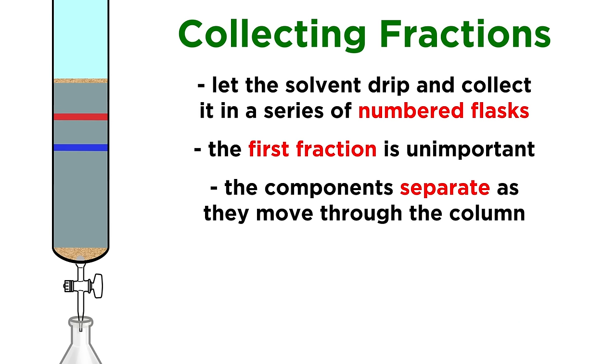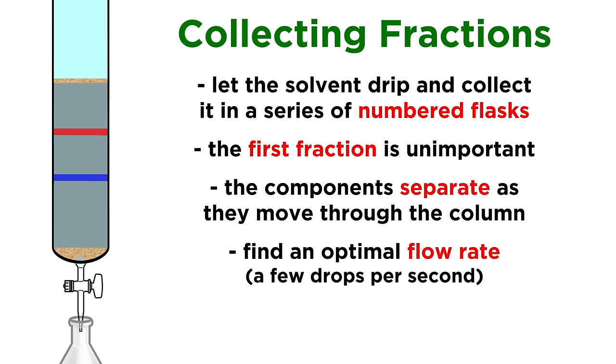As we push eluent through the column, the components will begin to move with it, and separate as they go, just like what happens on a TLC plate. Try to find an optimal flow rate. We can't go too fast or too slow, or it will not separate properly. Just a few drops per second should be fine.